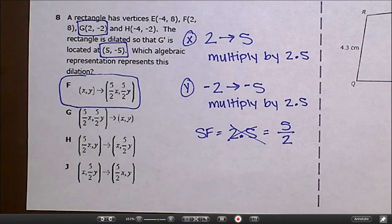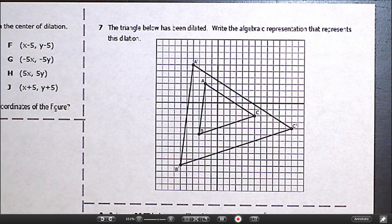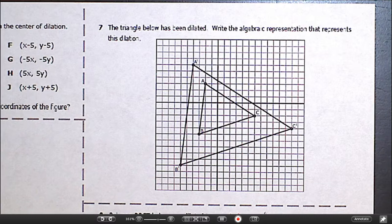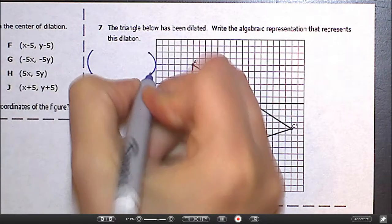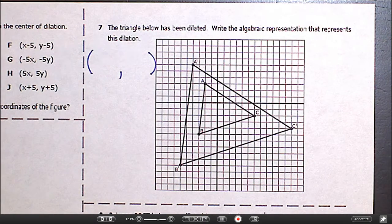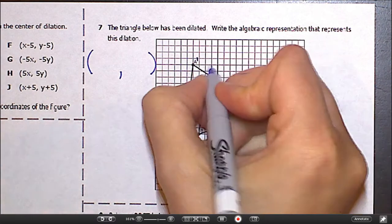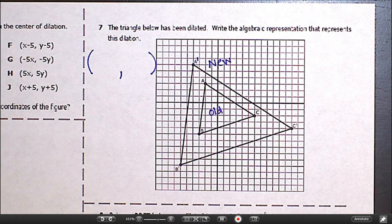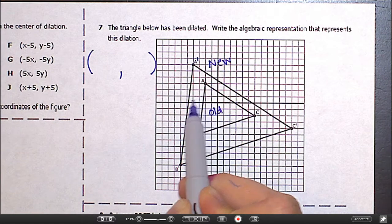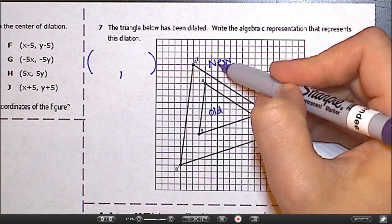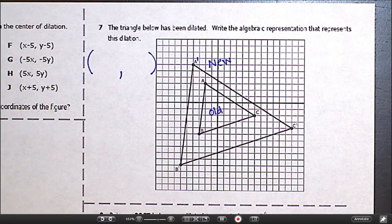On your own, I'd like for you to do number seven. It says the triangle below has been dilated. Write the algebraic representation that represents this dilation. So that should be in the form of something x, something y. Something times x, something times y. Also keep in mind that this is our old figure here, and it may be hard to see that's a prime. So this is our new figure out here. So it got bigger. So you just need to look at each point. Say, what did we do to this point to our x value to get this x value? And what did we do to our y value to get this y value? And then same thing for B and C to double check. So please pause the video now and bring this to me when you have an answer for number seven.